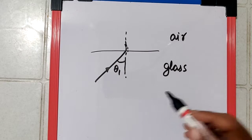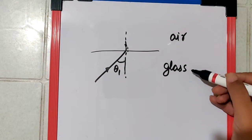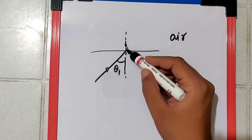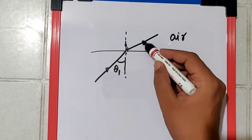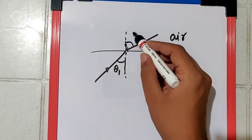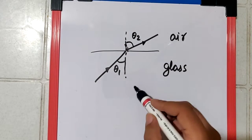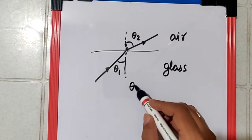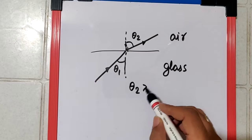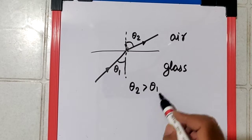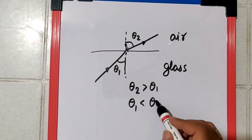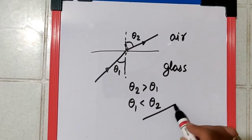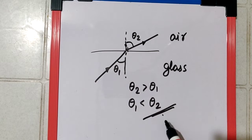When light goes from a denser to a rarer medium, it bends away from the normal. So we can very clearly see that theta2 is greater than theta1, or theta1 is less than theta2. And that is the final answer.